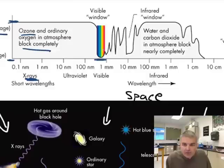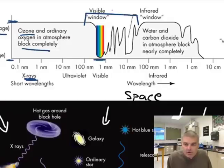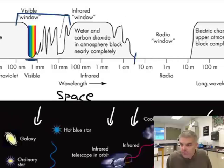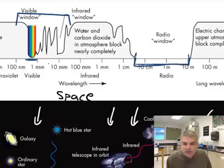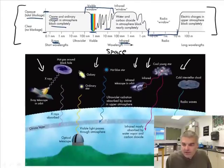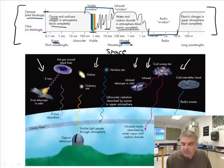And down here is clear, no blockage. So visible light right here, that's one of the windows, one of those atmospheric windows. We have another atmospheric window for radio waves. And then there's a small infrared window. When we get to the infrared section, water and carbon dioxide in the atmosphere block most of the infrared light. Radio again, there's a window. And then the electric charges in the atmosphere completely block really long wavelength light.